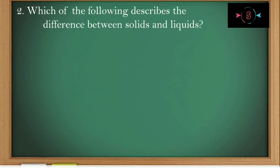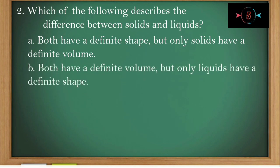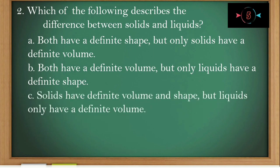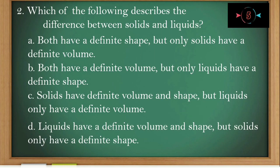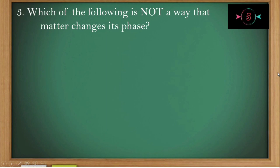Number two: Which of the following describes the difference between solids and liquids? Letter A, both have a definite shape but only solids have a definite volume. Letter B, both have a definite volume but only liquids have a definite shape. Letter C, solids have definite volume and shape but liquids only have a definite volume. Letter D, liquids have a definite volume and shape but solids only have a definite shape. The correct answer is letter C.